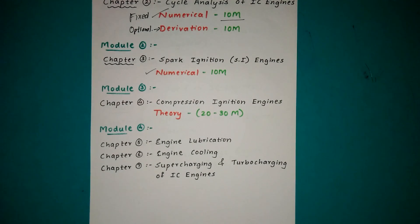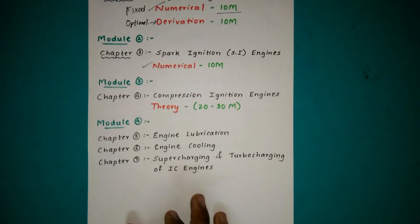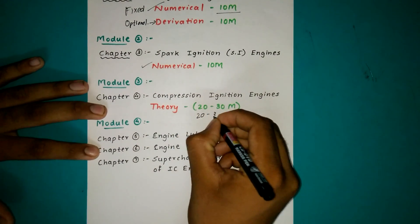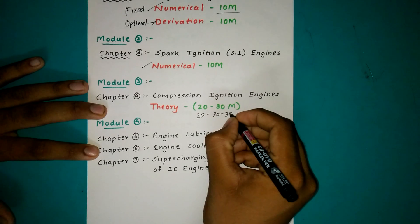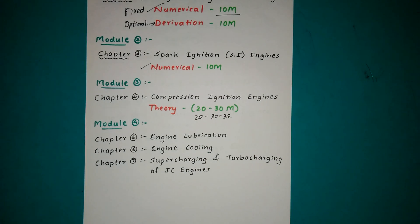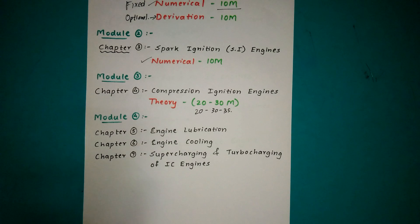Then comes Module 3, the CI Engine or Compression Ignition Engine. This chapter is not so vast, you can attempt the theory from this chapter. The theory is usually for 20 to 30 marks, sometimes also for 35 marks. You can end up the chapter within three to four hours and the theory is also easy, so do go for that theory of CI engines.